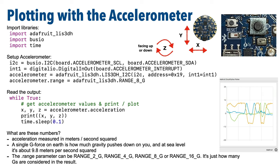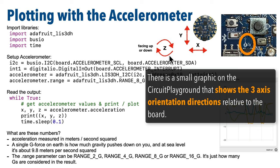The accelerometer on the CPB is a common accelerometer called the LIS3DH. That's not a very friendly name, but if you happen to see this name in code, it's referring to this particular and very popular standard low-cost, low-power accelerometer. This accelerometer reports motion and orientation along three axes.